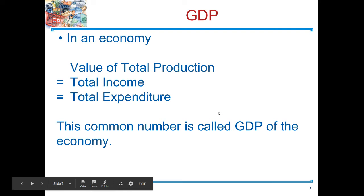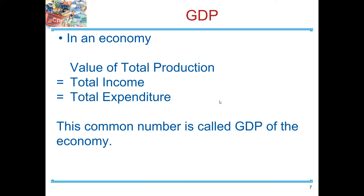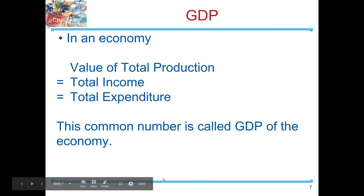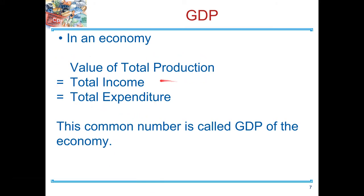From the previous two examples, we can see that in any economy, the value of total production is always equal to the total income of everyone in the economy, which is also equal to the total expenditure by every agent in the economy. This common number is known as the GDP of the economy.